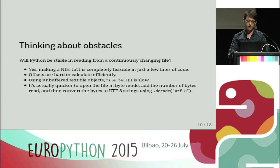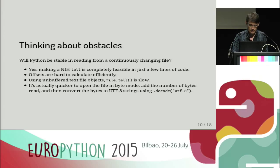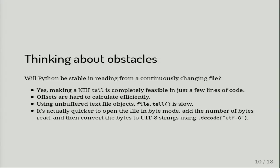One of the first issues we considered was how stable the service would be when tailing the access log. It turns out it's very easy and completely stable, but there is one tiny problem: offsets are hard to calculate efficiently, and we need those offsets for the bin log file. Using buffered text files is almost useless because you cannot know the exact offset of a single line. Unbuffered text files are really slow. So it's actually easier to open the file in byte mode, read a number of bytes, count the bytes in a line, and there you have the offset.